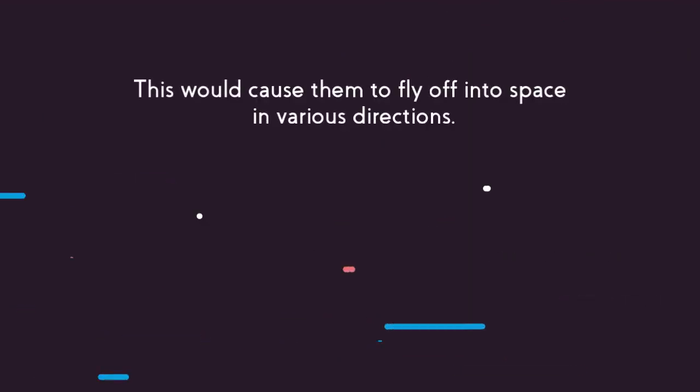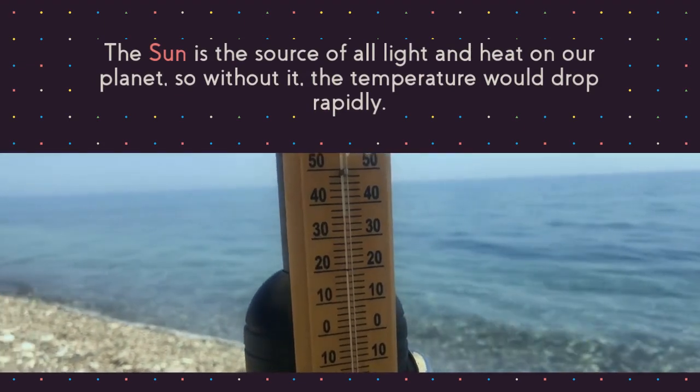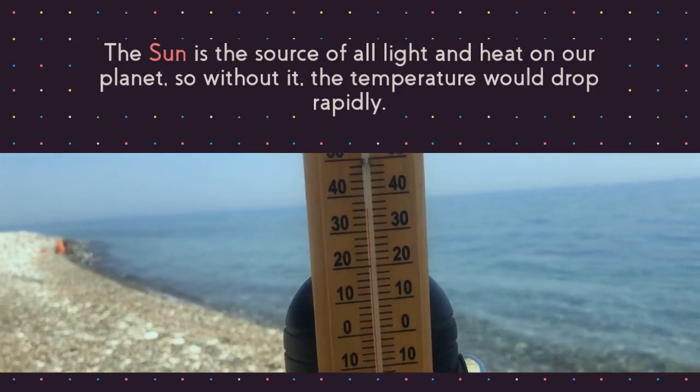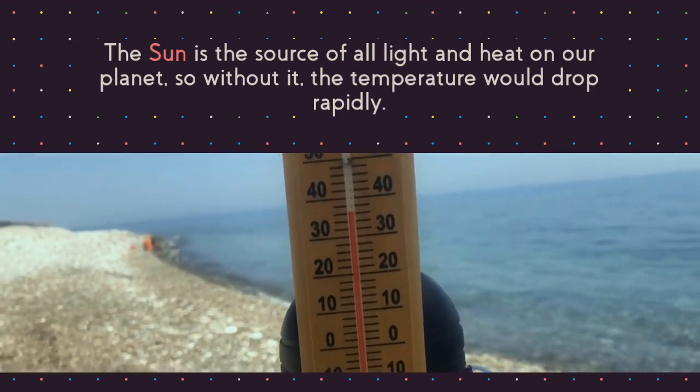This would cause them to fly off into space in various directions. The sun is the source of all light and heat on our planet, so without it the temperature would drop rapidly. This would lead to a global temperature drop.